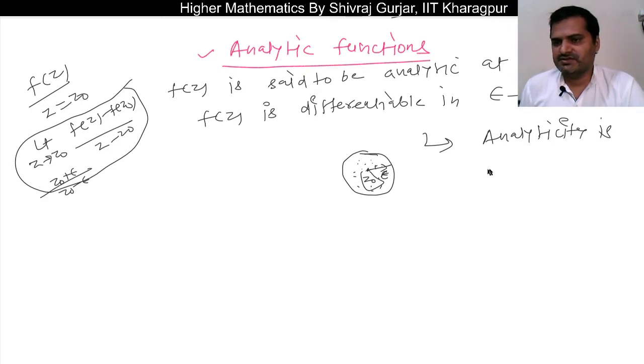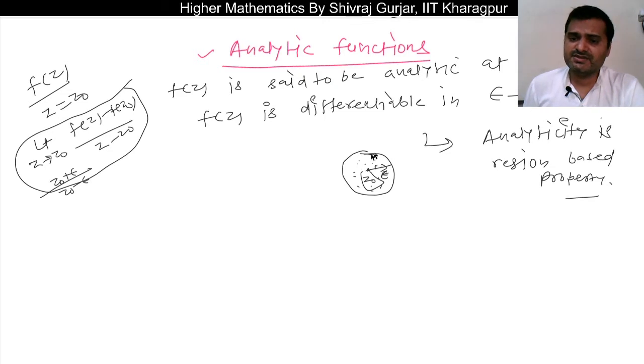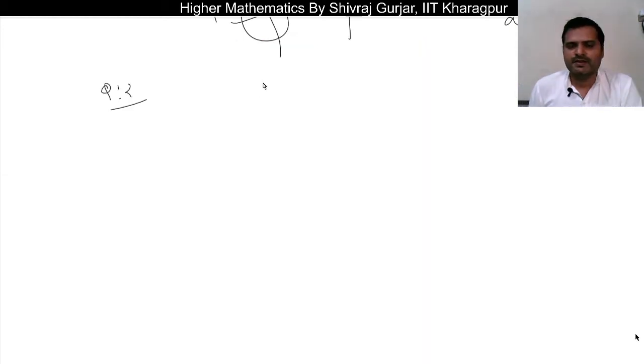So from this, one thing we can say is that analyticity is a region-based property or concept. Okay? Meaning that analyticity is not decided by one point; an entire region is needed.